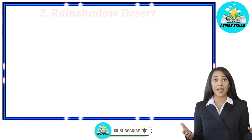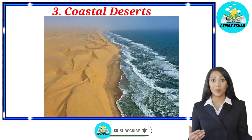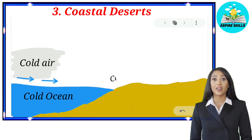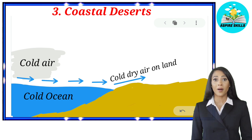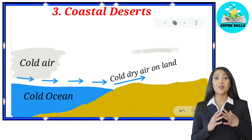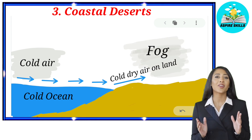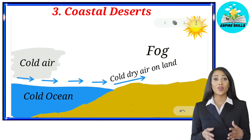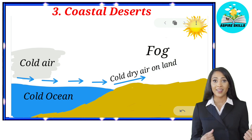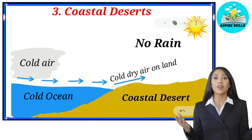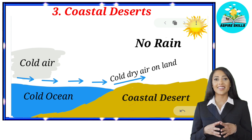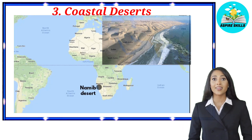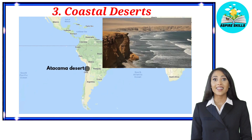The third type of desert is coastal deserts. When cold ocean currents move towards the shore, these winds are cold because they are in contact with cold water, and they produce a layer of fog, which is a thick cloud of tiny water droplets that are too small to fall as rain. This heavy fog moves onto the land, but the sun's heat makes it disappear during the day. Since there is no rain, the coastal region turns into deserts. Examples include the Namib Desert in South Western Africa and the Atacama Desert in Chile.